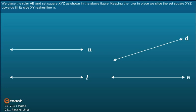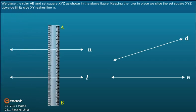We place the ruler AB and set square XYZ as shown in the above figure. Keeping the ruler in place, we slide the set square XYZ upwards till its side XY reaches line N.